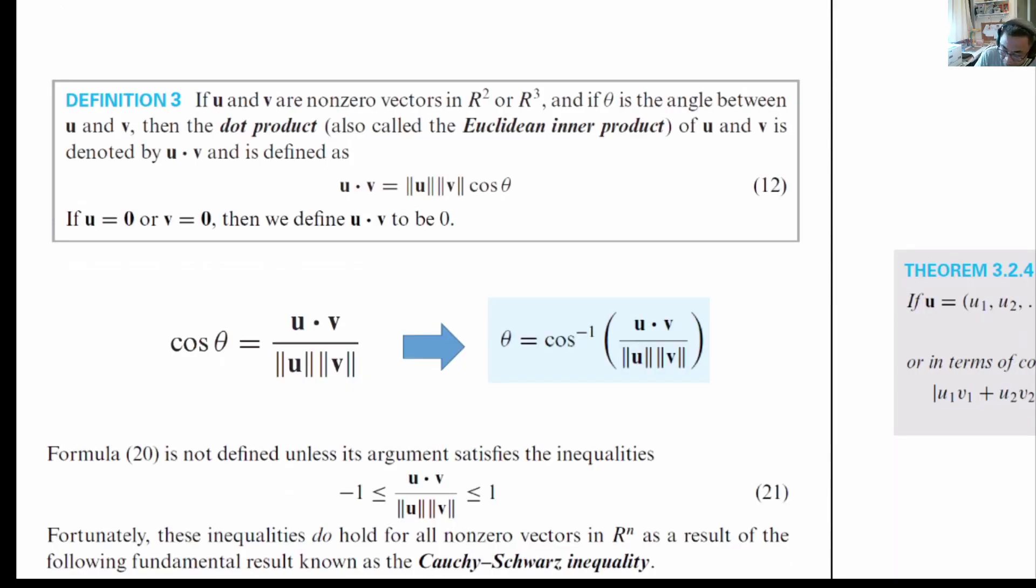Now we manipulate this equation and move it to the left hand side and we will get u dot v divided by norm of u norm of v equals to cosine theta. And therefore, by taking arc cosine, we have this expression for theta.